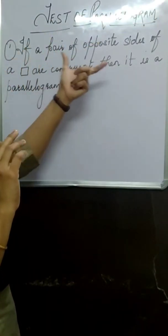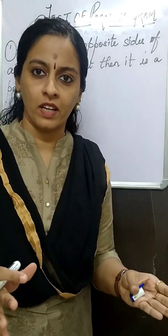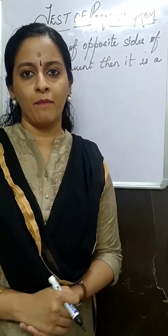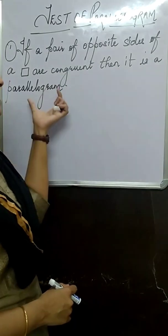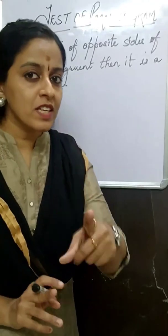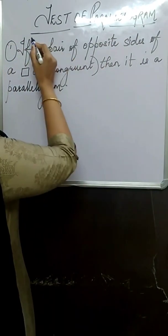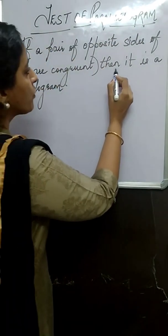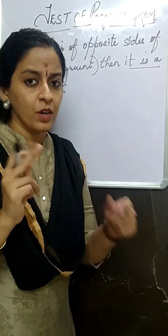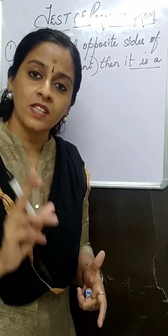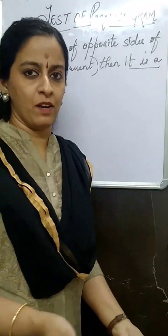The first test of parallelogram goes this way: if you have a quadrilateral and the opposite sides are congruent, then it is a parallelogram. What is given? A pair of opposite sides of the quadrilateral are congruent. What we have to prove? That it is a parallelogram — a quadrilateral whose opposite sides are parallel. If we get opposite sides parallel, then it is a parallelogram.